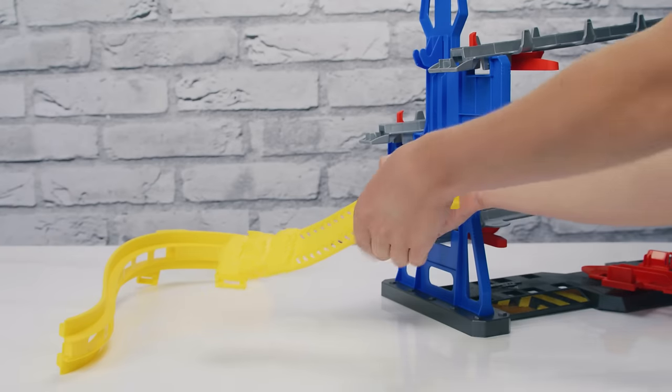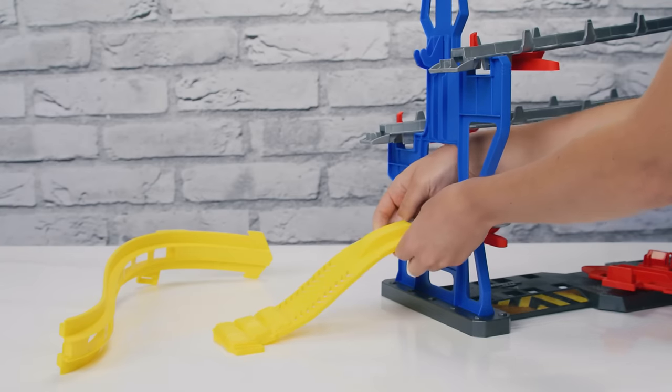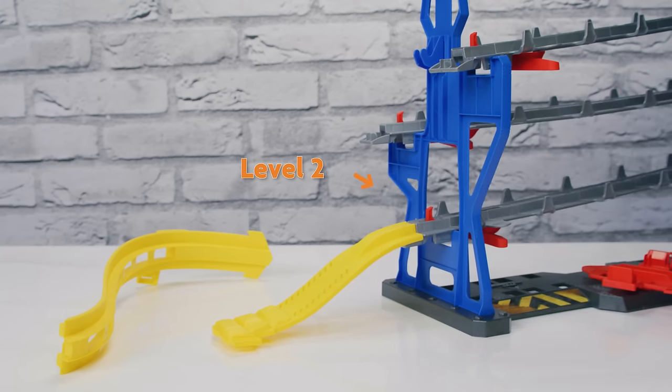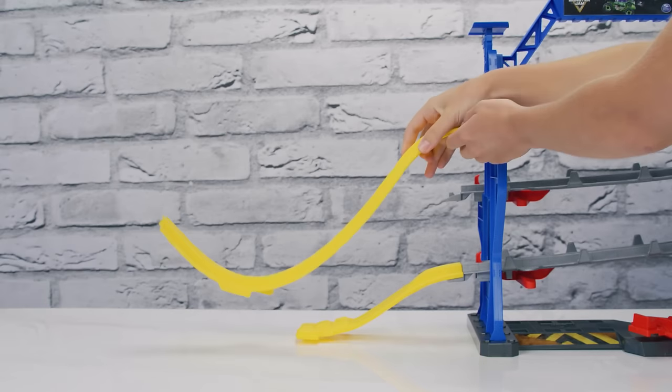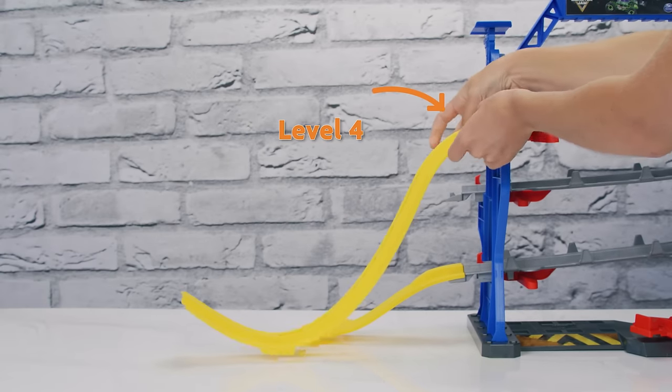Time to add the Car Crush and Big Air Ramps. Add the Car Crush Ramp to the second level and add the Big Air Ramp to the fourth level.